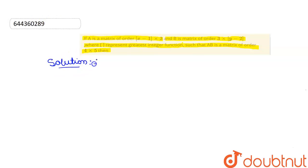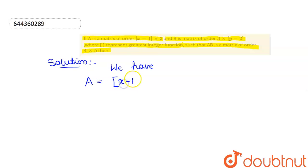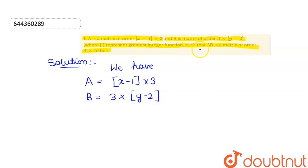Order 4 into 5 — see the solution for this. We have two matrices A and B. A equals to [x-1] into 3 and B equals to 3 into [y-2]. In this question, we are given AB is a matrix of order 4 into 5.